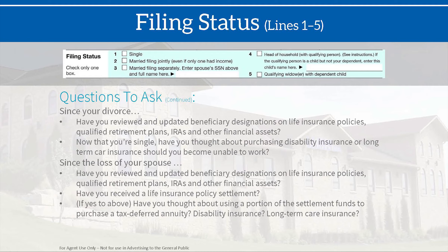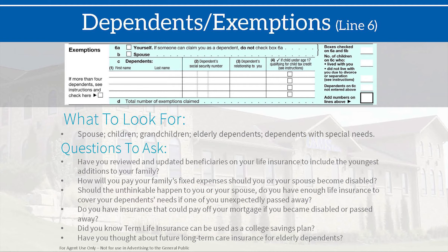There could also be a divorce that changes the financial picture. Looking at dependents and exemptions on line six — children and grandchildren with special needs may appear as dependents. A key question to ask: should the unthinkable happen to you or your spouse, do you have enough life insurance to cover your dependents' needs if one of you unexpectedly passed away?